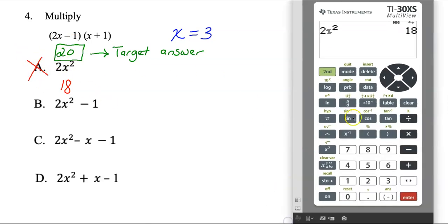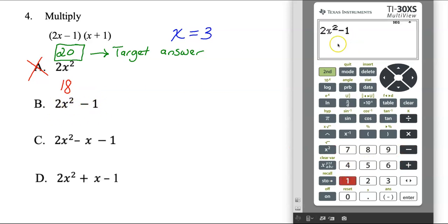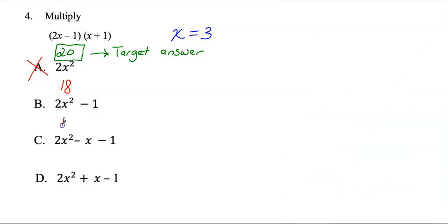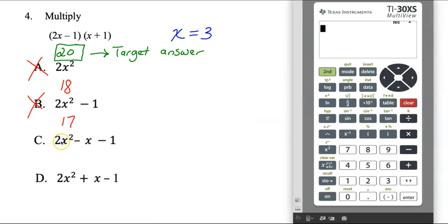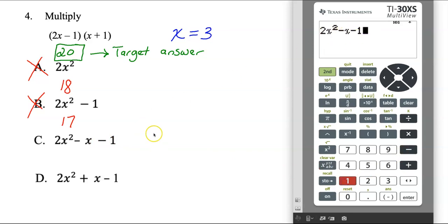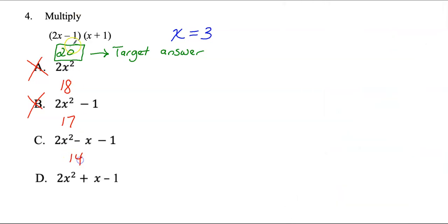Let's go to B. Clear the calculator and punch in 2x² minus 1. Hit enter — output is 17, but my target answer is 20. That doesn't match, so B is gone. Let's go to C. Clear and punch in 2x² minus x minus 1. Hit enter and I get an output of 14. That does not match up with my target answer of 20. C is gone. At this point I circle D and move on.